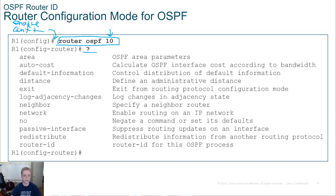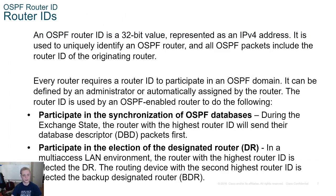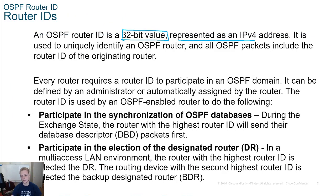We can do a question mark to see what commands are available. The one we're looking for is the 'router-id' command to specify our router ID. The router ID is a 32-bit value - it looks like an IP address but it's not necessarily an IP address.